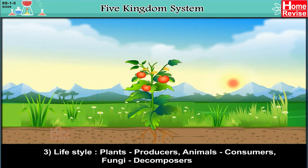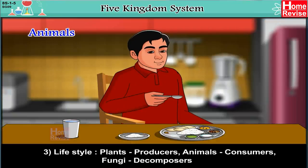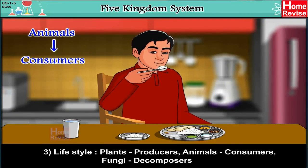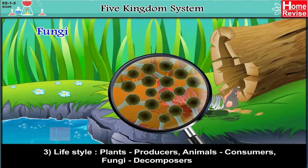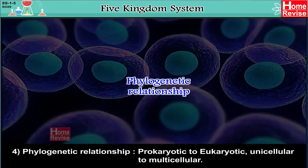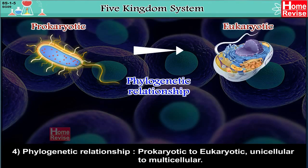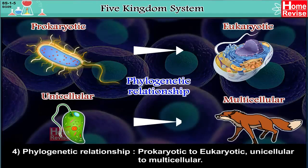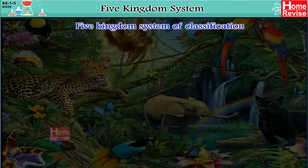Criterion 3: Lifestyle — Plants are producers, Animals are consumers, Fungi are decomposers. Criterion 4: Phylogenetic Relationship — from prokaryotic to eukaryotic, and unicellular to multicellular. Let's have a look at this figure.